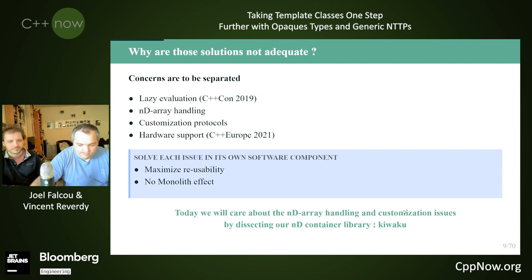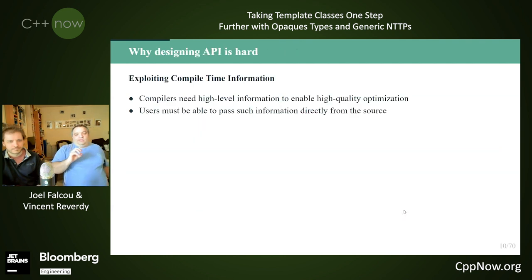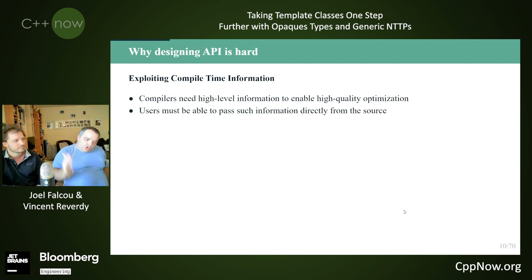The question is: I want to have N-dimensional containers, I want them to be easy to use and close to the performance of hand-written code — how should I do that? To explore this, we'll be dissecting our ongoing project of this N-dimensional array library called Kyouko, and trying to see how we solve different aspects of this problem. The continuing theme is that designing an API for a bunch of users is actually hard.